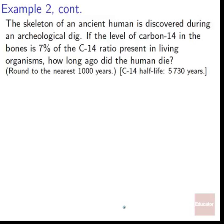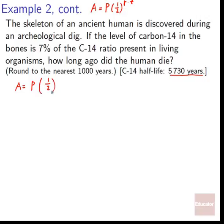Specific problem: A skeleton of an ancient human is discovered during an archaeological dig. If the level of C-14 in the bones is 7% of the C-14 ratio present in living organisms, how long ago did the human die? Round to the nearest 1,000 years. The C-14 half-life is 5,730 years. The general formula for half-life is A equals P times one-half to the rate times t. The rate here is based on 5,730 years: A equals P times one-half to the t over 5,730.